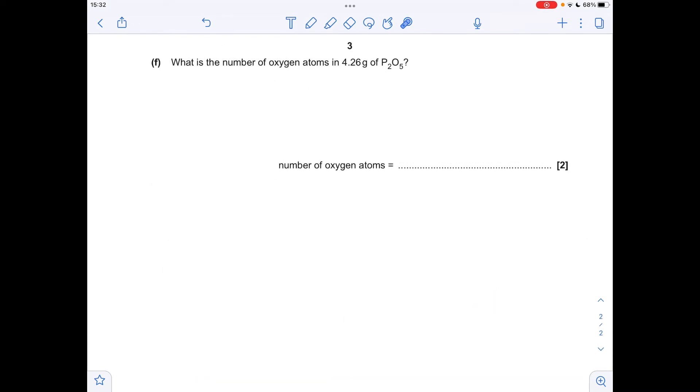Finally, part f: What's the number of oxygen atoms in that many grams of P2O5? Well, first thing we need to do is work out how many moles that is, so mass over Mr, 0.03 moles of P2O5. So the moles of oxygen atoms is going to be five times that, because for every mole of P2O5 there's five moles of oxygen atoms. So to turn that into a number of oxygen atoms, we multiply by Avogadro's number, which comes out at 9.03 times 10 to the 22.